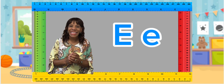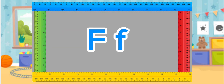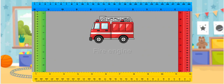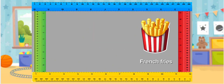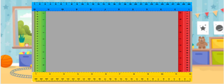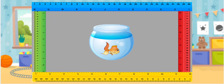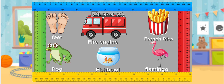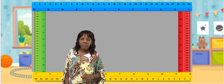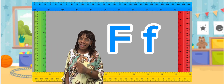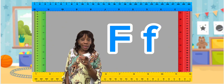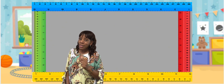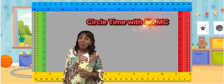Fantastic! I see a capital F and a lowercase f. Fish, Flamingo, and French fries — these F words are such a prize. Fishbowl and flamingo too — these F words are just a few. Great job! You've learned up to the letter F. Like this video and follow me for more.